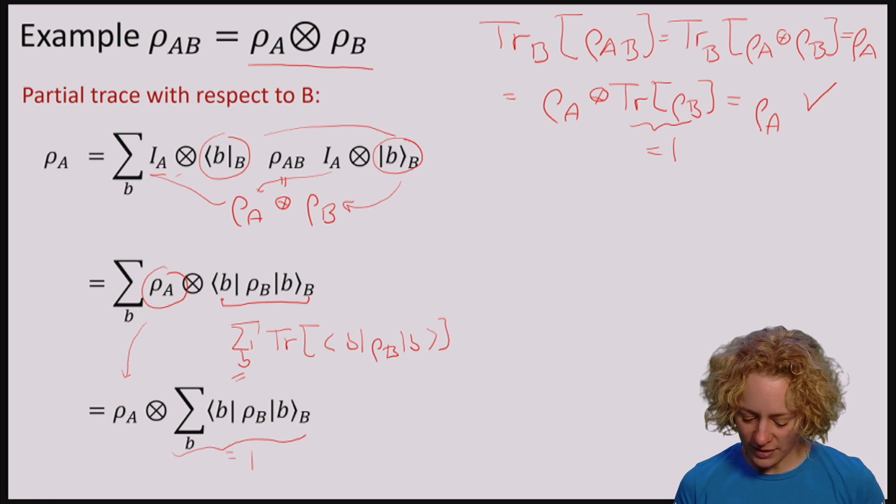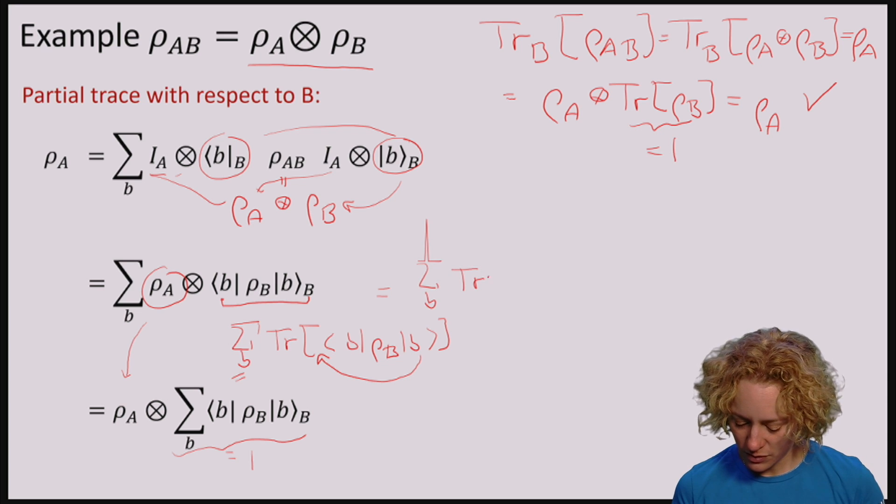Now using the fact that the trace is cyclic, I'm going to move this B over here. So this gives me sum over B, trace of |B⟩⟨B| with ρ_B.